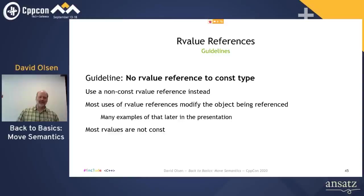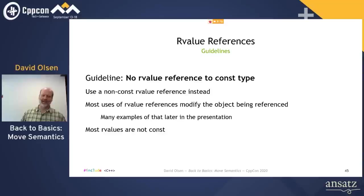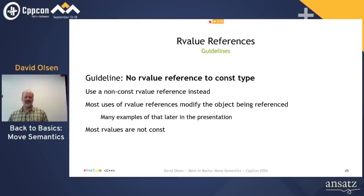A general note about guidelines in this presentation: these are guidelines, not unbreakable rules. At some point in your career you will run into situations where these guidelines don't apply. If you find that you want to not follow one of these guidelines, first, understand what you are doing; second, take responsibility if things go wrong; and third, be able to explain to your colleagues, such as the ones who want to reject your code review, what you are doing and why it is the right way to do it.